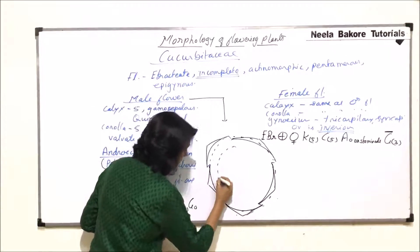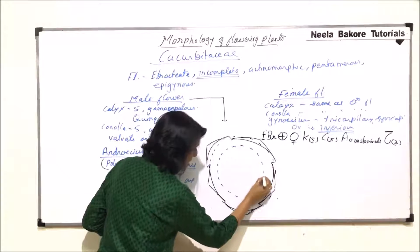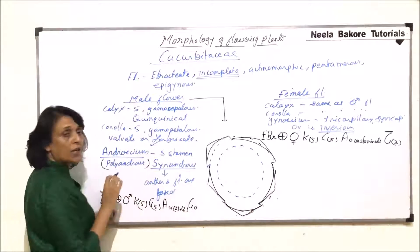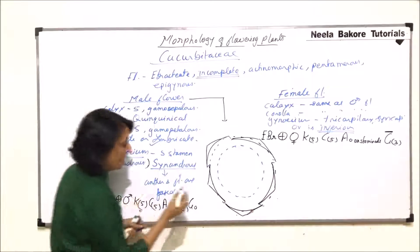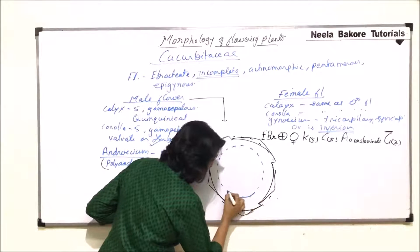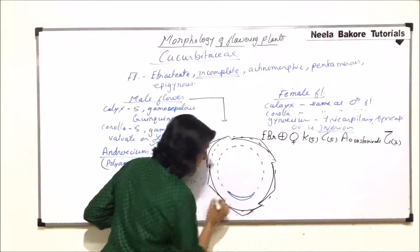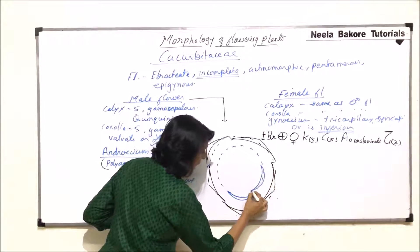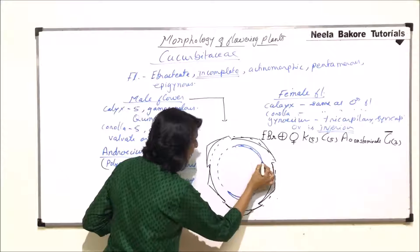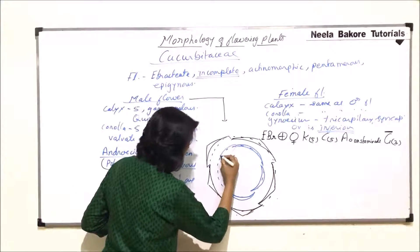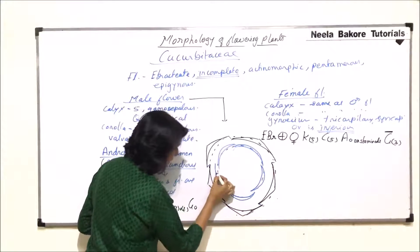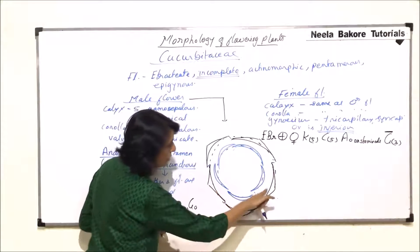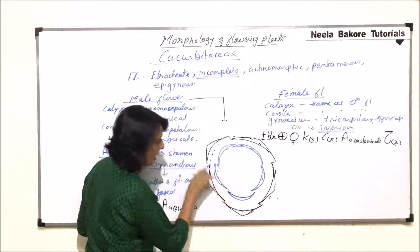Next are the petals — five petals with imbricate aestivation. In valvate aestivation petals are end to end; in imbricate, one petal is completely out, one is completely in, and three are partly in and partly out. These two whorls — sepals and petals — remain the same for both male and female flower diagrams.